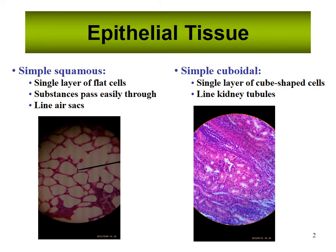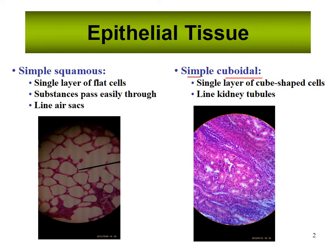Simple cuboidal is one cell layer thick of cube-like cells, and these are found in kidney tubules. This is a cross section of a kidney. If you look carefully, you'll see a pretty perfect little wagon wheel — you can see the lumen, the opening inside that kidney tubule. You can actually see the basement membrane as a white line around it. The kidney tubules run at different angles, but a good cross-sectional cut gives you this classic wagon wheel appearance.